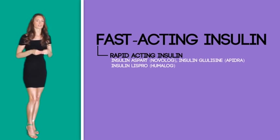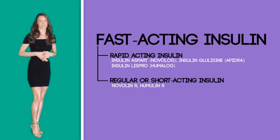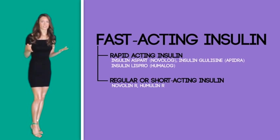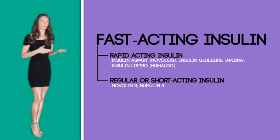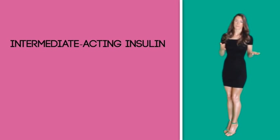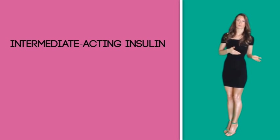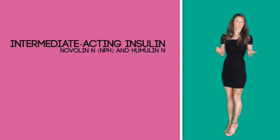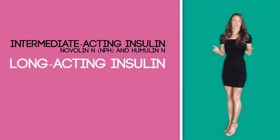Examples of rapid acting insulin include insulin aspart, also known as Novolog, and insulin lispro, also known as Humalog. Regular or short acting insulin enters the blood in about 30 minutes, peaks in two to three hours, and continues to work for three to six hours; it can be injected prior to meals. Examples include Novolin R and Humulin R. Intermediate acting insulin takes two to four hours to absorb, peaks at four to twelve hours, and works for twelve to eighteen hours. Examples include Novolin N (NPH) and Humulin N.